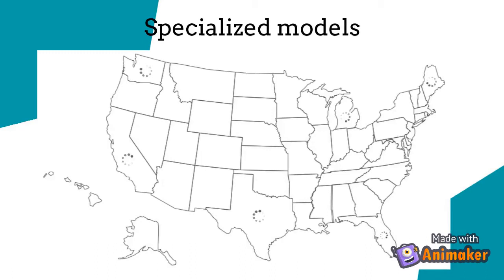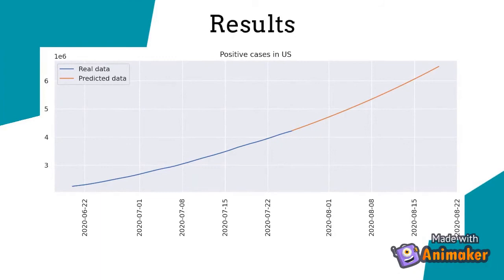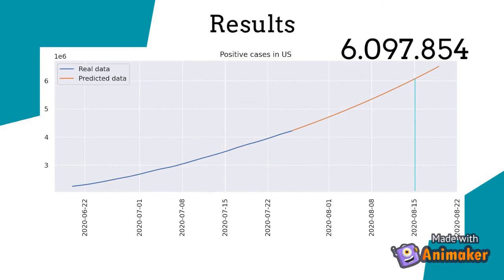Finally, aggregating results from each state, we obtain our final prediction curve. If there are no changes in countermeasures, we estimate over 6 million positive cases by the 15th of August.